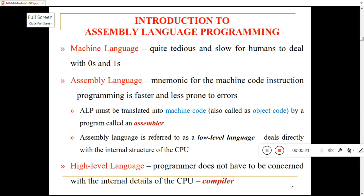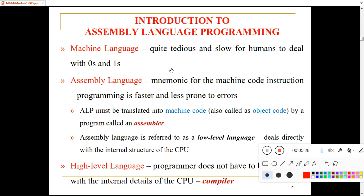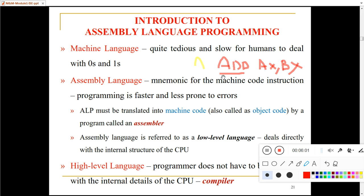Mnemonics means opcode. For example, if I want to add two numbers, I will use the instruction: ADD AX, BX in assembly language. That means the content of BX is added to AX. Here, ADD is called the mnemonic or opcode, and AX and BX are called operands. The mnemonic or opcode indicates what type of operation is carried out on the operands.